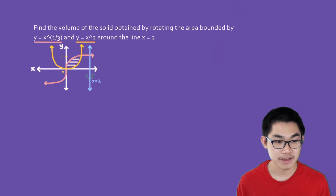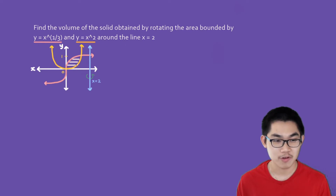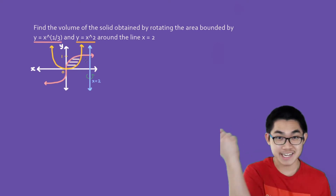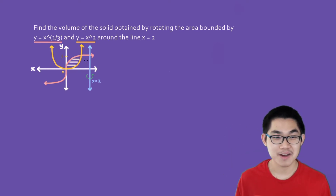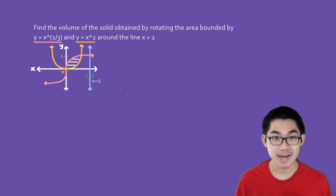That is the pink function right here. And y is equal to x squared, which is the yellow function, around the line x is equal to 2. So if we take the area between these two functions and we rotate it around the blue vertical line, what kind of three-dimensional object are we going to get?